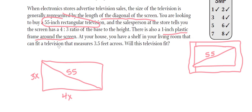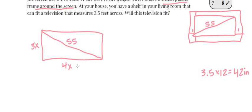At your house, you have a shelf in your living room that can fit a television that measures three and a half feet across. Let's convert that: three and a half feet times 12 gives you 42 inches. So we're trying to figure out if this television with the 55-inch diagonal, side lengths of 3x and 4x, and the additional one-inch plastic frame can fit in our 42-inch shelving area. To solve this, we need to find x so we can figure out the actual length and width. Televisions are rectangular, making the diagonal the hypotenuse.